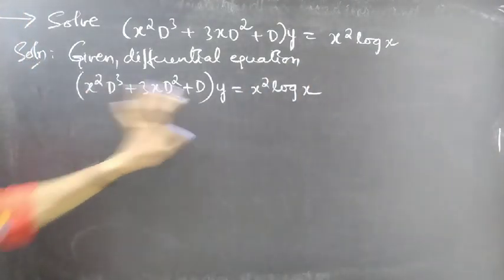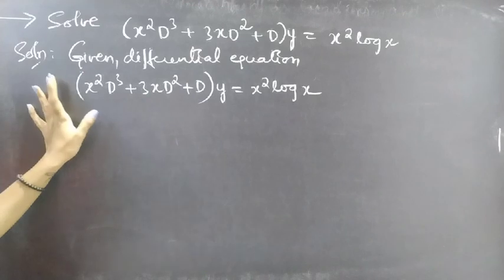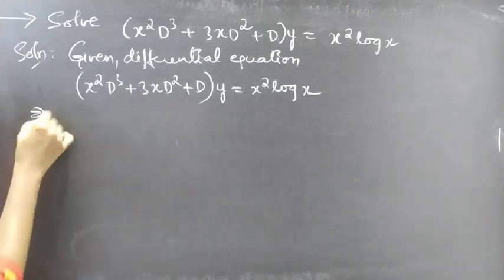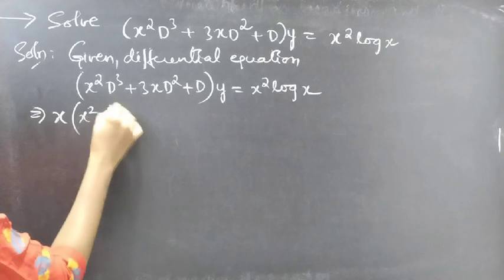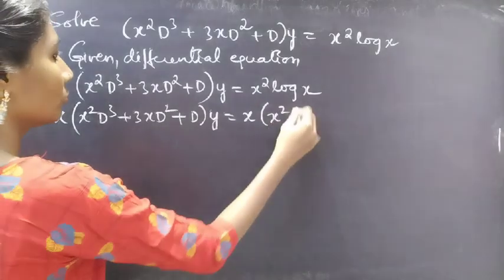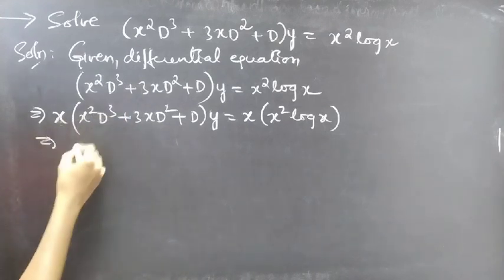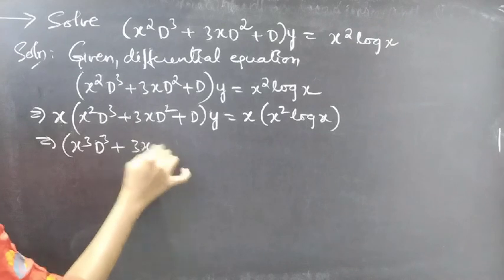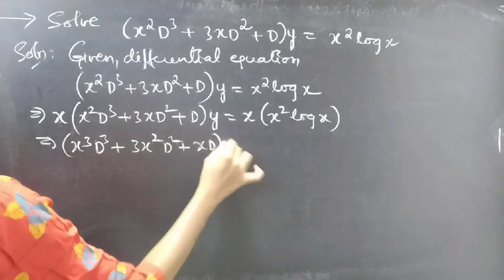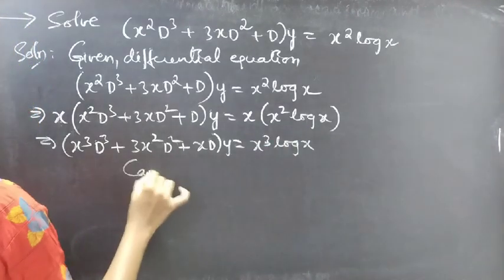If you notice, one x is missing in the LHS. If we get x cubed D cubed, 3x squared D squared plus xD, the equation will be Cauchy's equation. So what we'll do, we'll just multiply both sides with x to get Cauchy's equation.